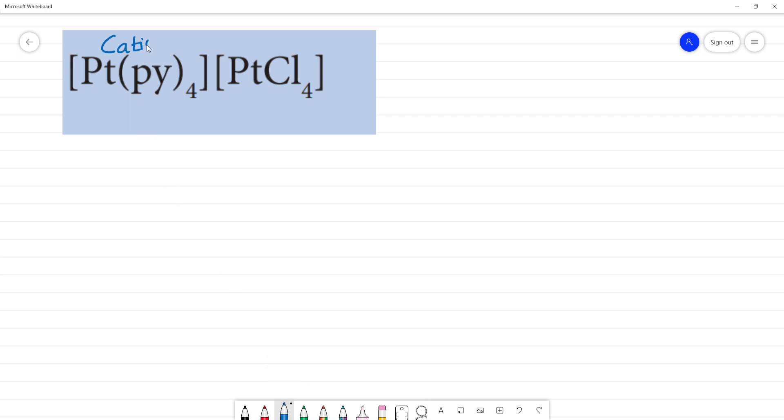This is cation. Cation, this is anion. One name is cation complex. Cation, where is complex? That is platinum. This is pyridine, 4.